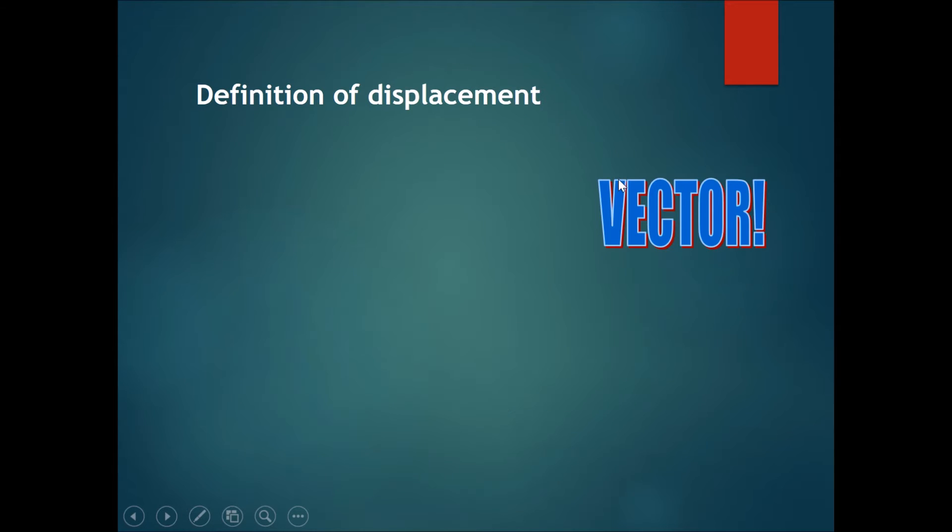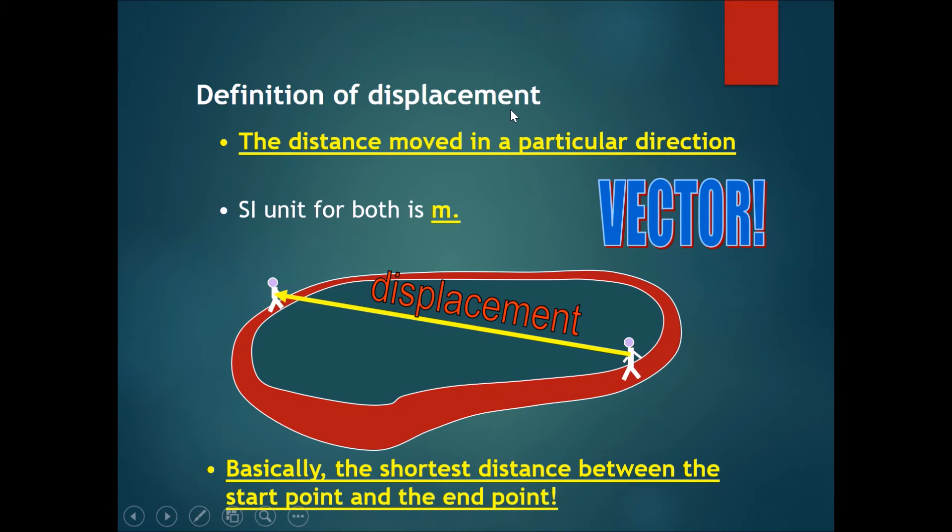Now let's compare it with something similar but quite different. Displacement is a vector quantity. Displacement means the distance moved in a particular direction, and the SI unit for both distance and displacement is meters. Let's say the same guy walks all the way around the track again. He walked the same distance as before, however his displacement...